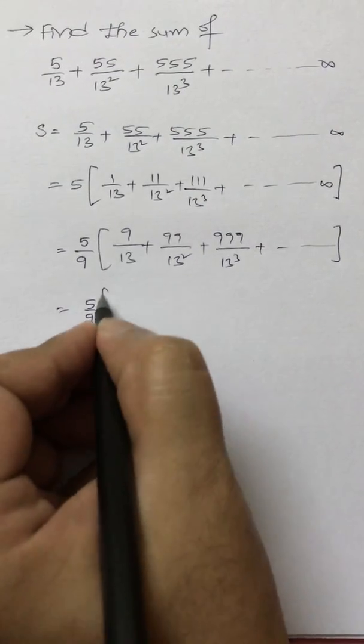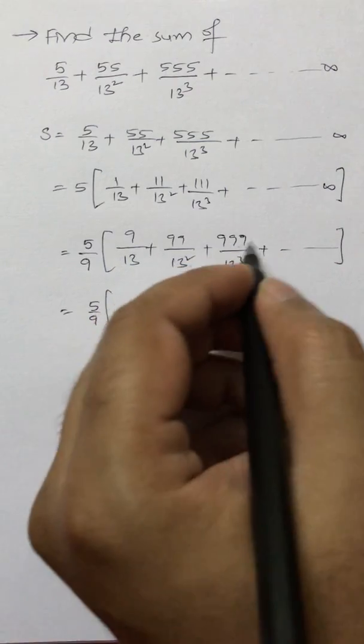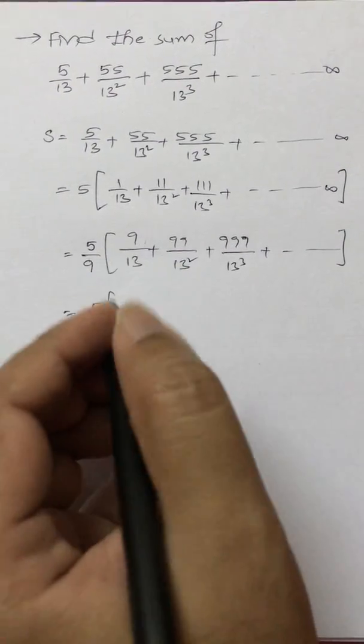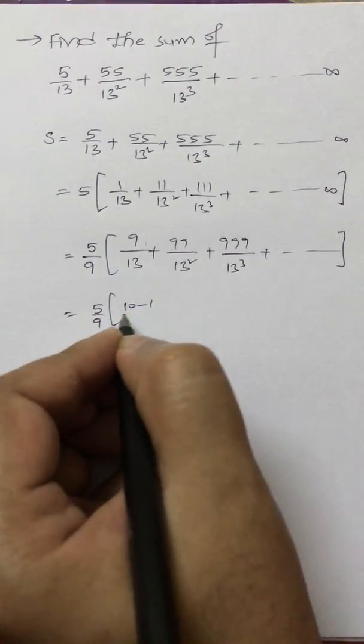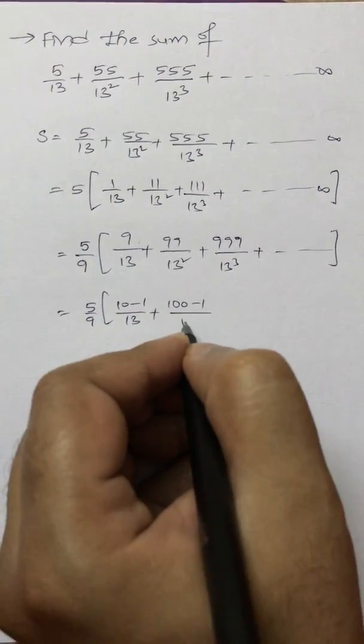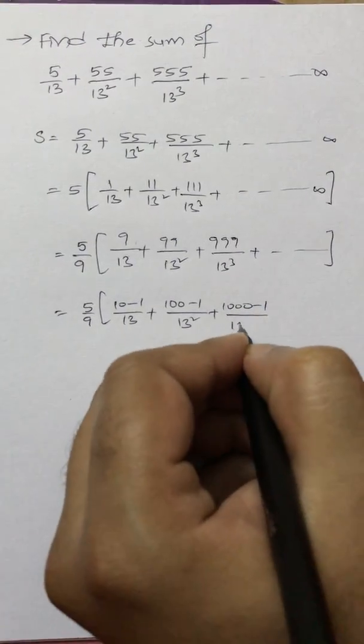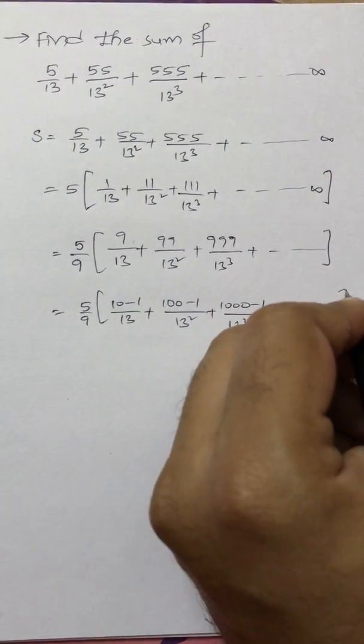Now here, 9 we can write as 10 minus 1, so (10-1)/13. 99 is 100 minus 1 by 13². 999 is 1000 minus 1 by 13³, and so on.